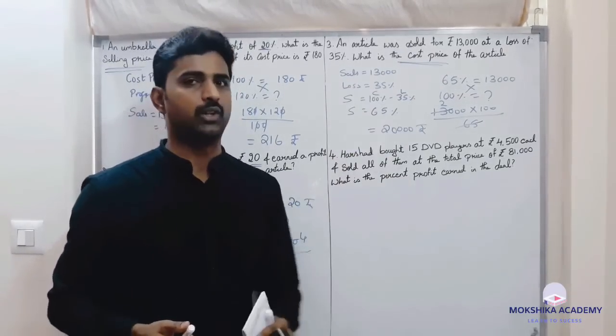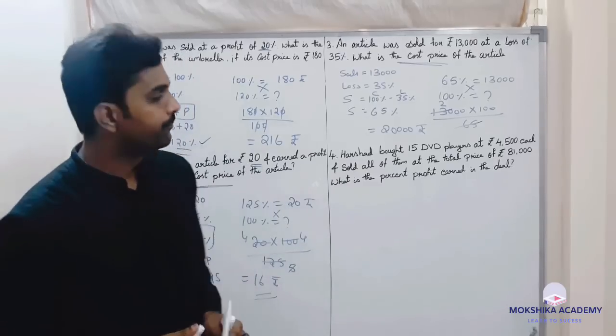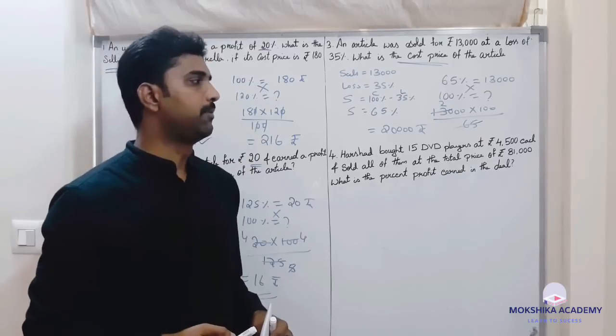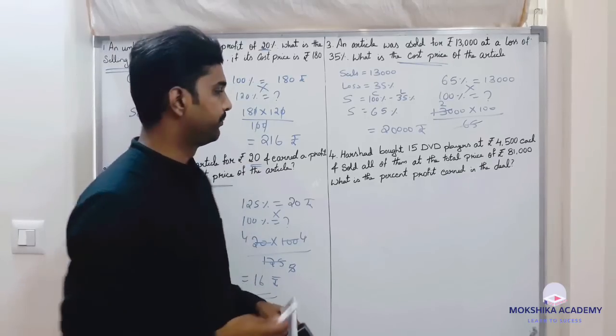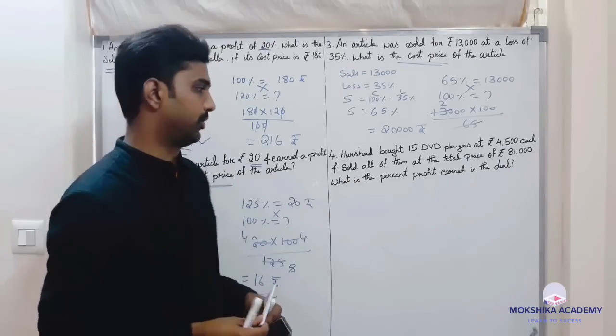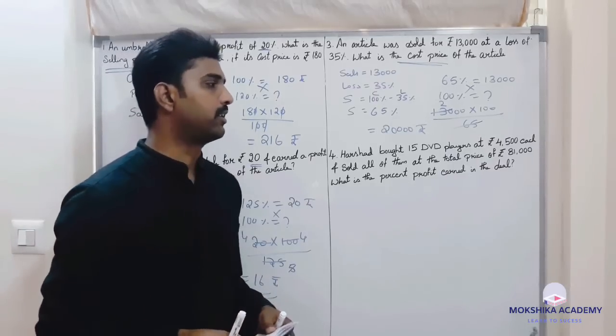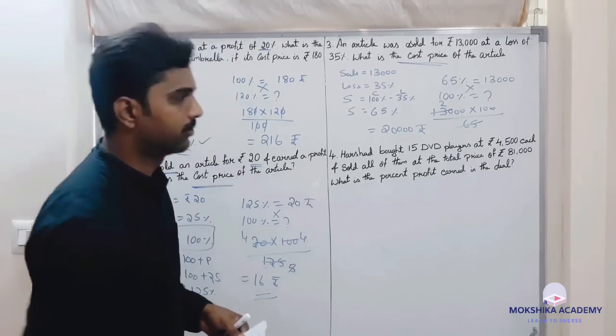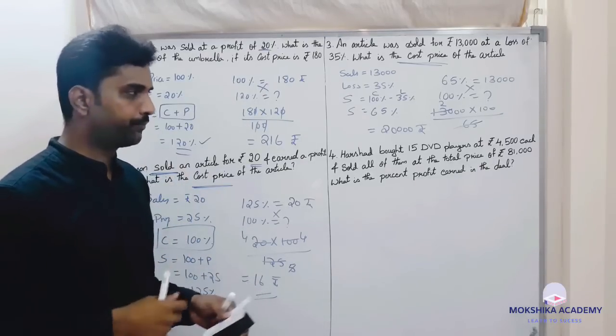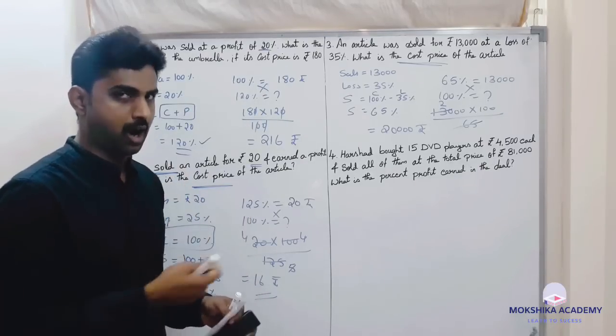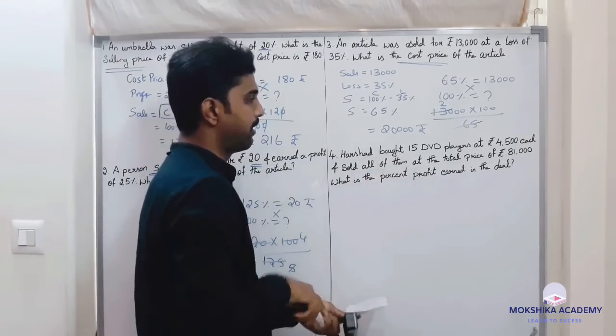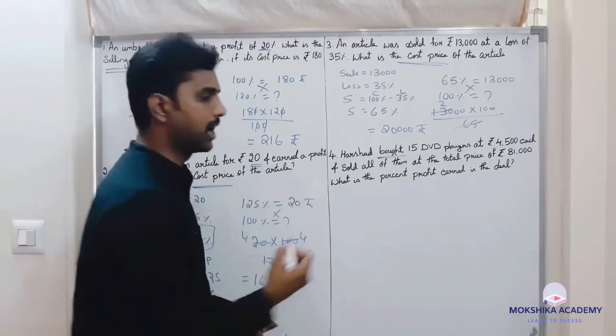So loss is the difference between these two, seven thousand. Let us see the next one. Arshad bought 15 DVD players at four thousand five hundred each and sold all of them at the total price of 81,000. What is the percent profit earned in the deal? Cost is 100 percent.